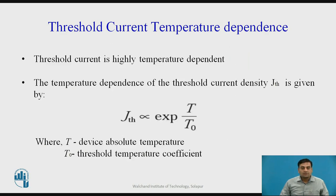In general terms, the threshold current tends to increase with temperature. The dependence of the threshold current density is approximately exponential for most common structures and is given by the formula: Jth is directly proportional to the exponential of T/T0, where T is the device absolute temperature and T0 is the threshold temperature coefficient — a characteristic temperature describing the quality of the material, also affected by the device structure.